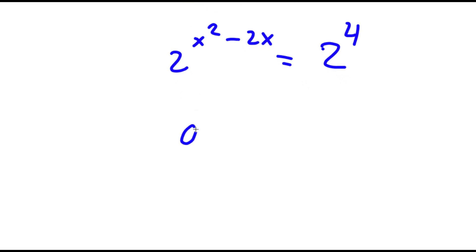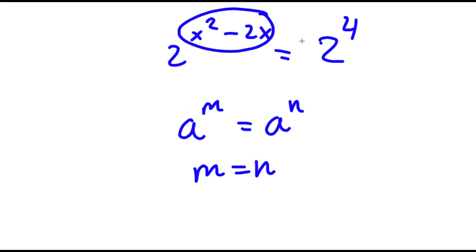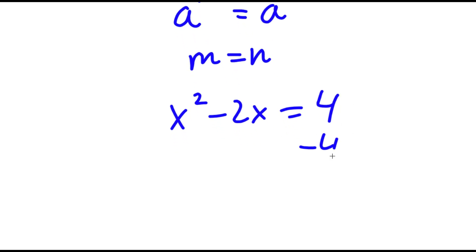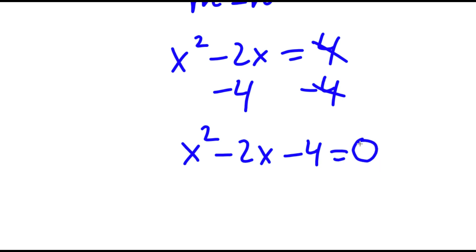Now if I have something in the form a to the power of m is equal to a to the power of n, this means that m is equal to n. So in this case, x squared minus 2x is equal to 4. To solve this I'm going to subtract 4 on both sides, so these two cancel out and now I have x squared minus 2x minus 4 is equal to 0.